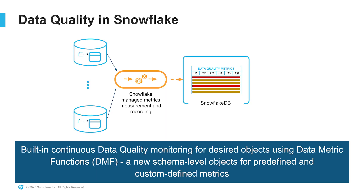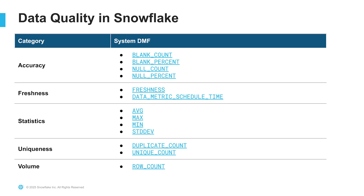Snowflake offers out-of-the-box DMFs across five key categories. The first is accuracy: how many records are null, blank, or have missing values? Then freshness — how fresh is the data, what is the latency, and how frequently are the metrics running? Key aggregations like average, max, min, and standard deviation statistics. Uniqueness counts for identifying duplicates. And volume — how many rows are in an object? DMFs are SQL-based, so it's also easy to customize them.